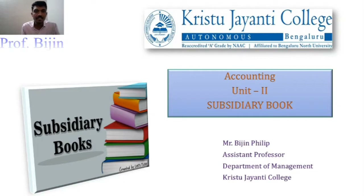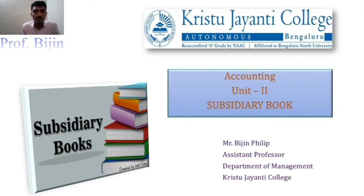Good morning everyone. Today we are going to discuss subsidiary books. You know the structured process of accounting: first we record transactions using the journal, then transfer them to the ledger account for classification, then summarize using the trial balance, and finally prepare the final accounts of an organization to identify profitability and financial position.